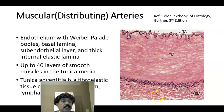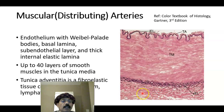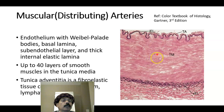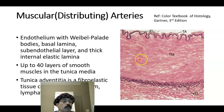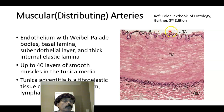The tunica adventitia is composed of fibroelastic connective tissue containing elastic fibers and collagen fibers. It also contains the vasa vasorum, lymphatics, and unmyelinated nerve fibers that release norepinephrine, causing vessel constriction. The vasa vasorum provides nutrition and oxygen to the outer part of the tunica media; the inner tunica media and tunica intima receive oxygen and nutrition by diffusion from the blood in the lumen.